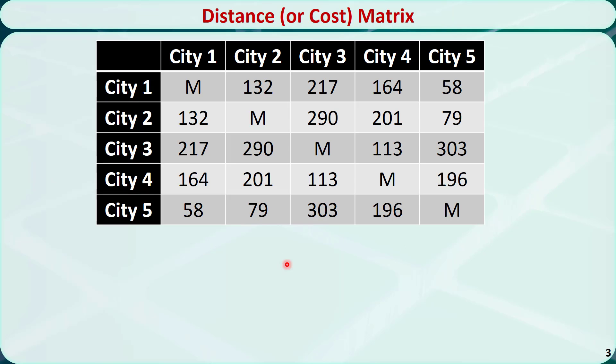Here is the distance matrix. For example, from city 1 to city 2, the distance C12 is equal to 132 miles. From city 1 to city 3, the distance C13 is equal to 217 miles, and so on.